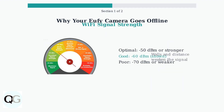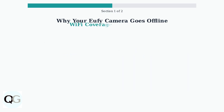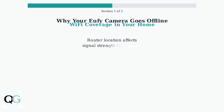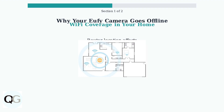Wi-Fi signal strength is measured in dBm. Your camera needs at least -50 dBm for a reliable connection. The meter showing -60 dBm is good, but anything weaker than -70 dBm will cause frequent disconnections. Your router's location determines Wi-Fi coverage throughout your home, and outdoor cameras are often at the edge of coverage areas, making them more susceptible to signal issues.